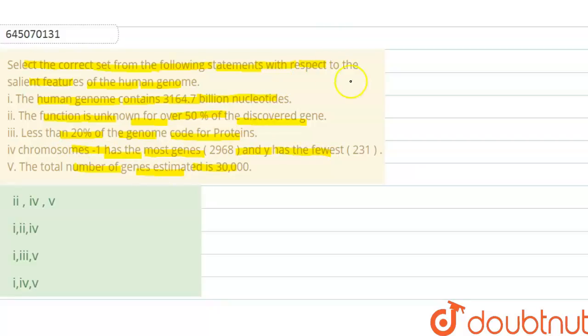So in this question we need to discuss which one is correct for HGP or which one is incorrect. If we talk about HGP features, HGP means Human Genome Project. First, if we talk about nucleotide number, nucleotide number is 3164.7 million. Second feature is that total gene is 30,000, and in that 30,000, over 50 percent of gene function is unknown.